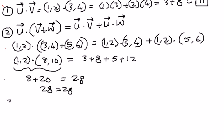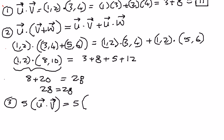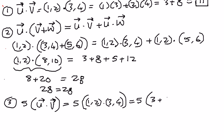The third example: we wanted to solve 5 times vector u dot vector v. We take 5 times the dot product of vector u and vector v — that is 5 times (1, 2 dot 3, 4). So 5 times (1 times 3 plus 2 times 4) equals 5 times 11, which is going to be equal to 55. This is our answer.